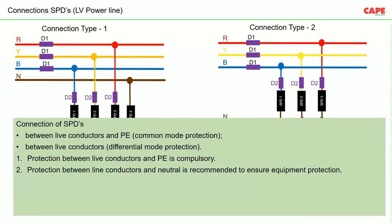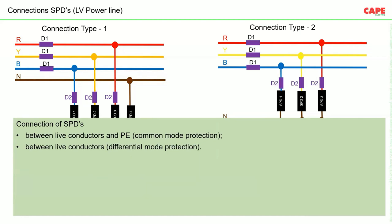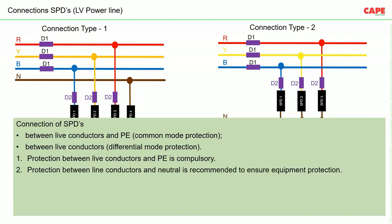Here are some key points regarding SPD connections. Point 1: connection between live conductors and PE is common mode protection, shown in connection type 1. Point 2: connection between live conductors is differential mode protection, shown in connection type 2. Protection between line conductors and PE is compulsory, whether achieved directly by connecting to the PE conductor or through neutral. Protection between line conductors and neutral is recommended to ensure equipment protection.